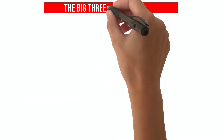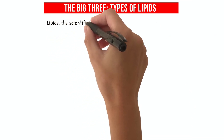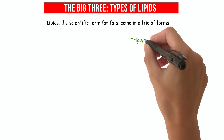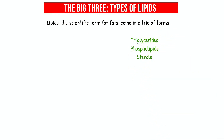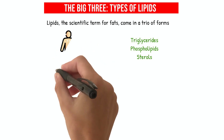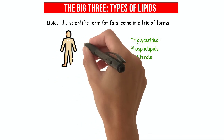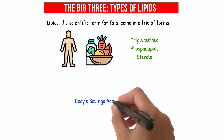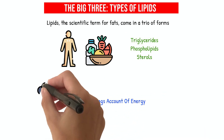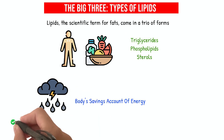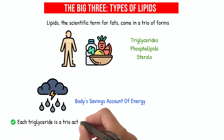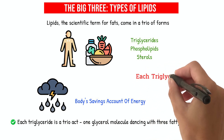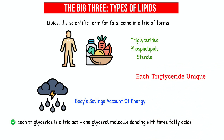The Big Three: Types of Lipids. Lipids, the scientific term for fats, come in a trio of forms: triglycerides, phospholipids, and sterols. Triglycerides are the most common, found abundantly in both our bodies and the foods we eat. They're like the body's savings account of energy, stored away for a rainy day. Each triglyceride is a trio act — one glycerol molecule dancing with three fatty acids. The fatty acids can vary, making each triglyceride unique.